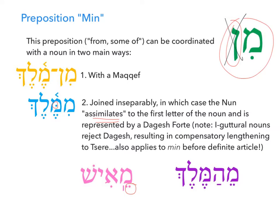Now what about nouns beginning with a guttural? Gutturals cause some problems, but the solutions are pretty similar to what we've seen before. If we want to add min to the front of ish (man or human), the aleph isn't going to take a dagesh, so we'll see compensatory lengthening instead — going from a hirek to a tzere: me-ish, 'from a man.' Know your vocab, know the rules about assimilation, and be aware of how gutturals behave, and me-ish should become something you can work with.